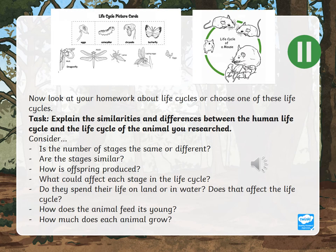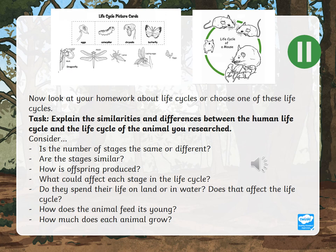This is your optional extension task. Think back to the animal that you researched for homework and see if you can answer these questions, comparing the human life cycle with whichever animal you studied. For example, you might want to talk about the number of stages in the life cycle — are they similar or different? How is the offspring produced — is it eggs or does it grow in the mother's tummy? Do they spend their life on land or in water, and how does that affect the life cycle? If you'd like to have a go, write a paragraph or two using these prompt questions. I'd love to see your work, so please take a photo and email it to your teacher, or type it up and email it across or bring it in next week.